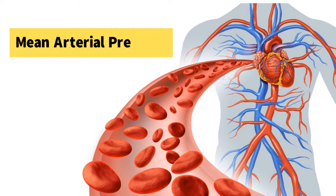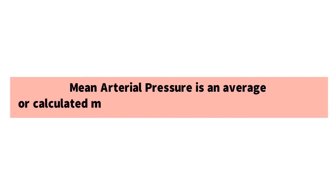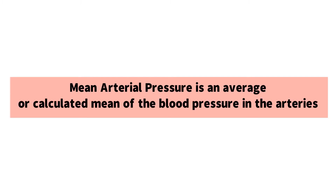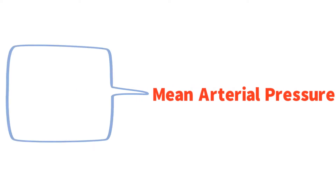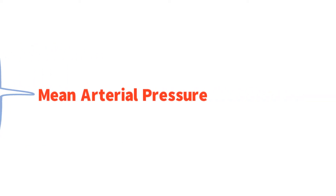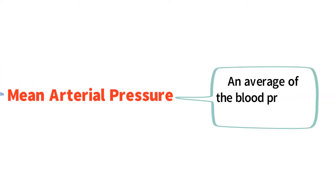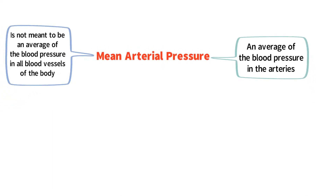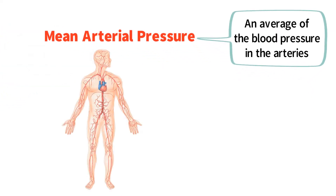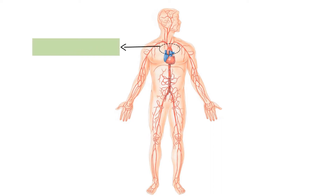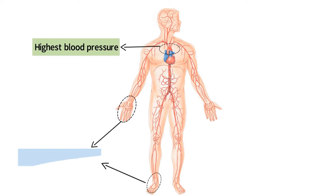This video will cover mean arterial pressure in three simple steps. Number one: mean arterial pressure is a calculated mean of the blood pressure in the arteries. It is important to point out that mean arterial pressure is not an average of blood pressure in all blood vessels, but rather an average in the arteries. Blood pressure is at its highest when blood first leaves the heart, and the aorta is where blood pressure is at its highest, as it receives blood from the left ventricle.